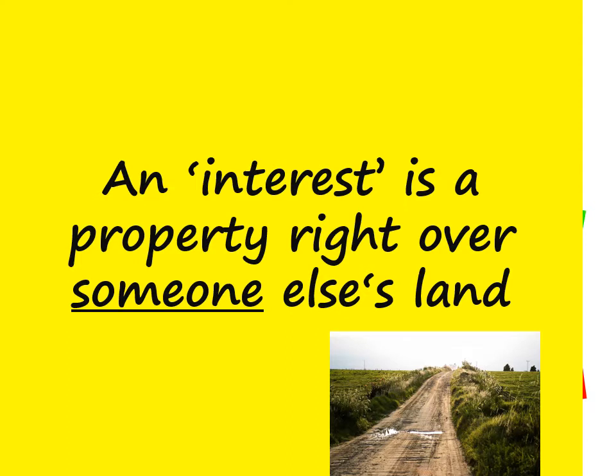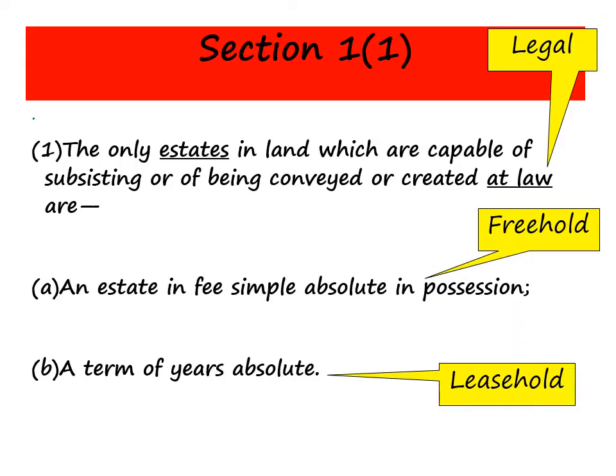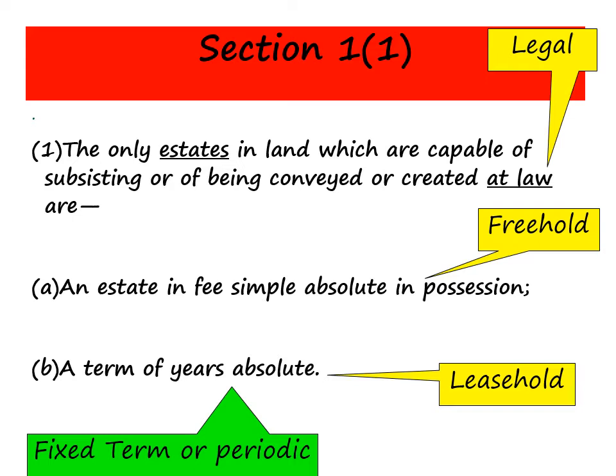Here is the text of Section 1.1, and it refers to estates which are capable of being conveyed — that means transferred or created — at law, meaning legal. There are two estates which are capable of being legal: the first is an estate in fee simple absolute in possession, which is a freehold; and the other is a term of years absolute, which is a leasehold or simply a lease. A term of years absolute refers to a fixed term lease — for a year, five years, or 21 years — but it also includes periodic leases, which keep rolling on every week, month, or year.